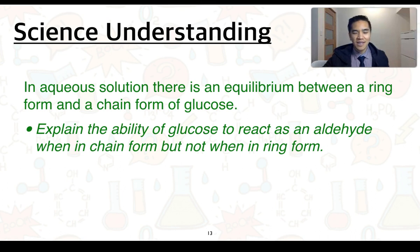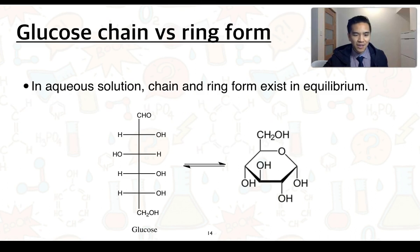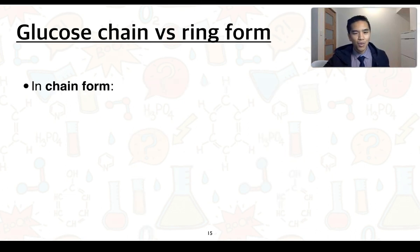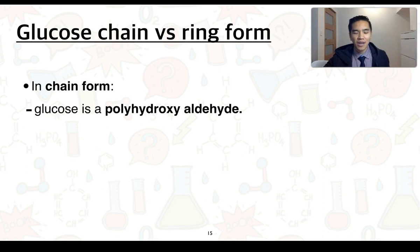This is our final science understanding. In aqueous solution, there is an equilibrium between a ring form and a chain form of glucose. You'll need to explain the ability of glucose to react as an aldehyde when in chain form, not when in ring form. So to revisit this idea, we can see that for glucose, that it exists in both a chain and ring form in aqueous solution. And these two are in equilibrium with one another. What we know is that in chain form, glucose is a polyhydroxy aldehyde. This means that it can be oxidized by Tollens' reagent. The ring form cannot react with Tollens' reagent.